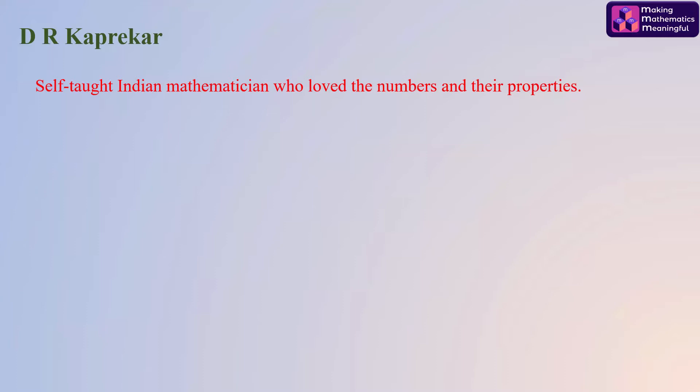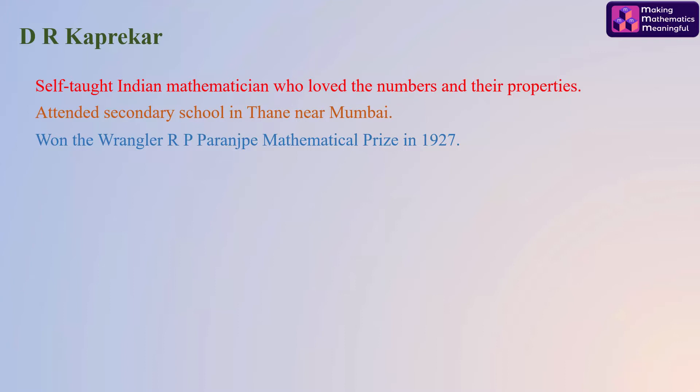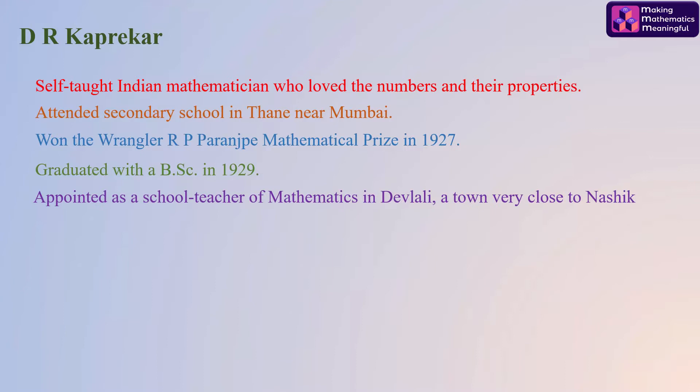He was a self-taught Indian mathematician who loved numbers and their properties. He attended secondary school in Thane, near Mumbai. He won the Wrangler R. P. Paranjpe Mathematical Prize in 1927 and graduated with a B.Sc. in 1929.